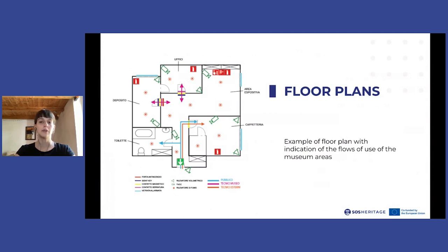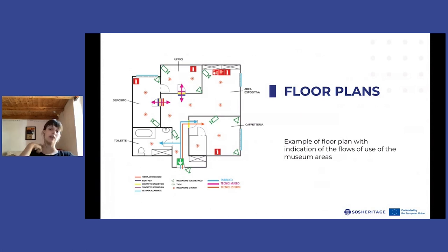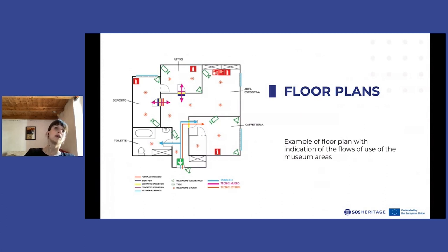Once the operational scenarios have been identified, it is advisable to define the flow of movement by all those who move within the museum's areas. For this purpose, it is advisable to create special floor plans for each operational scenario, using arrows to indicate the routes of visitors, internal staff, and external collaborators in the museum spaces with different colors. As you can see from these floor plans, it is immediately visible which areas are most vulnerable — because they may lack an active security system or represent areas accessible to the public.